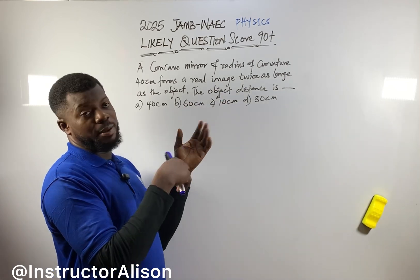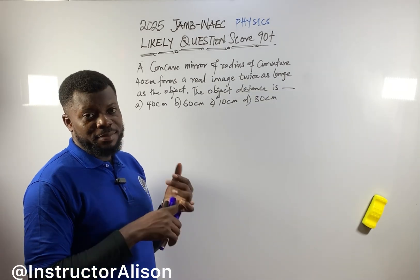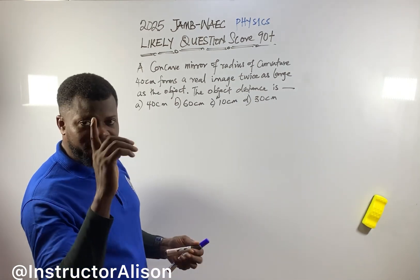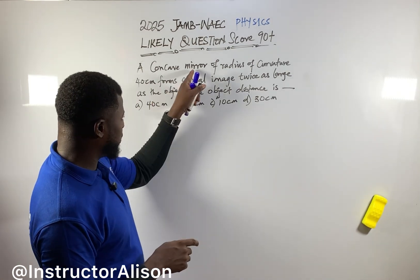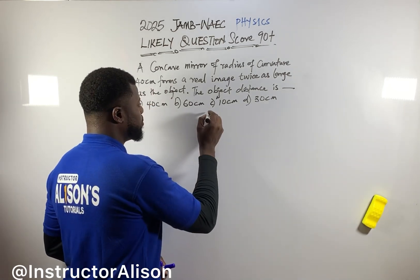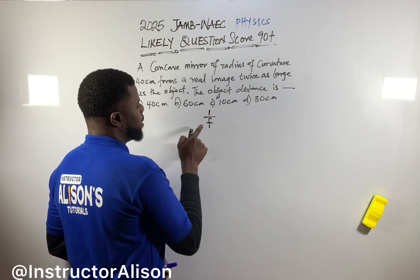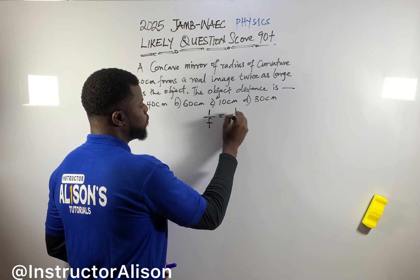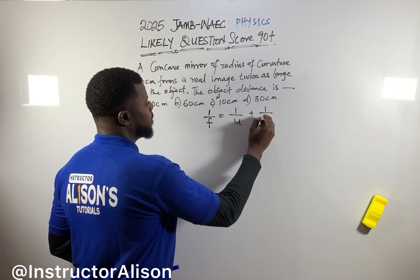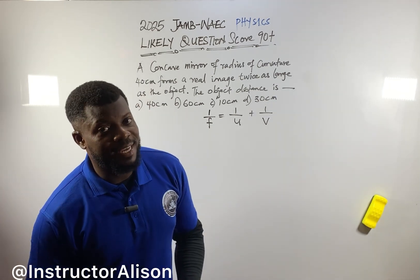First thing first, you are going to use the concave mirror formula. The mirror formula is: one over f equals one over u plus one over v. Don't forget we will use this formula.